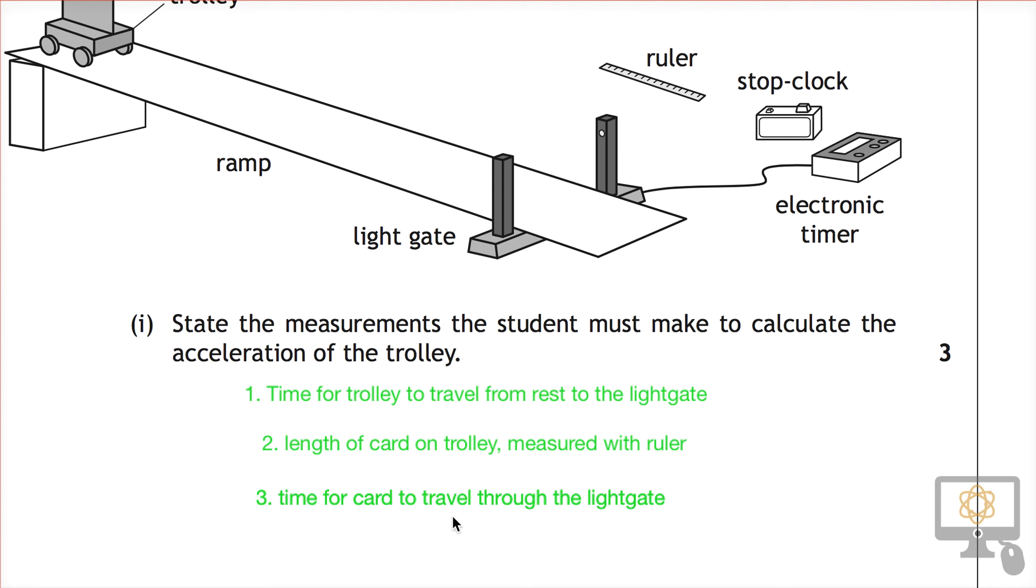And then in this third statement, again, you couldn't say it's just the time from the electronic timer, because clearly that's not telling you what that timer is actually measuring. It also wouldn't be good to say the time from the light gate, because again, it's not telling you what the light gate is measuring.